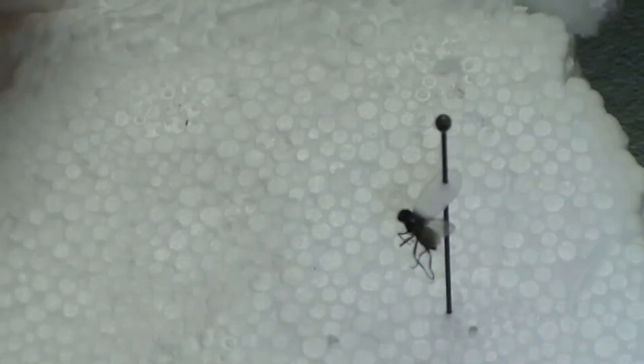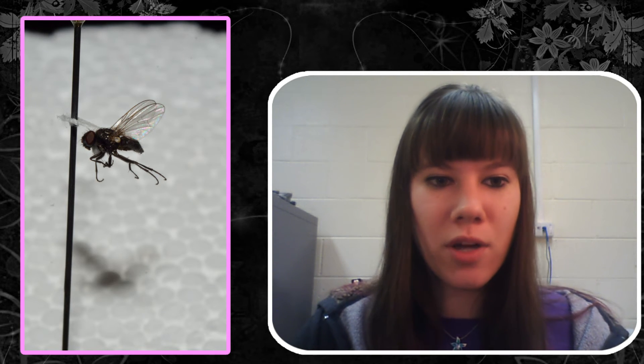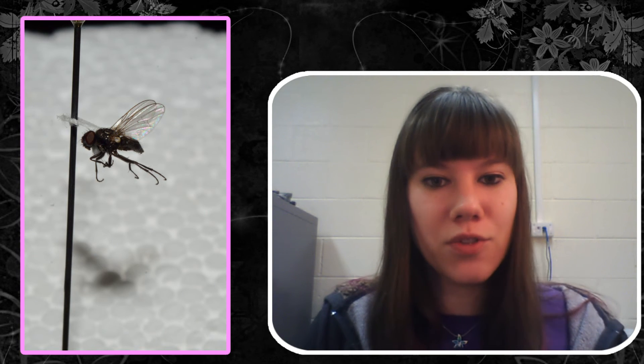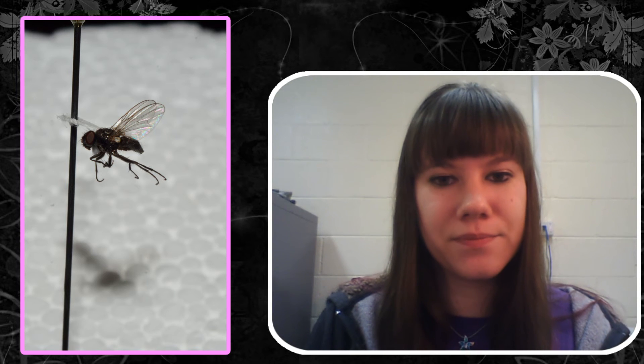Then you just let him dry. And when he's done, you're going to identify him and label him like you would any other insect. That's pretty much it. I hope this helps you point mount your insects. If you have any questions, feel free to leave them in the comments.